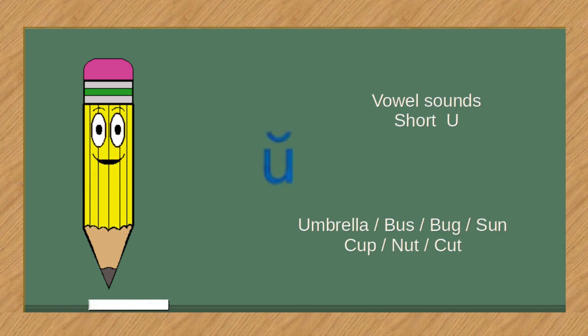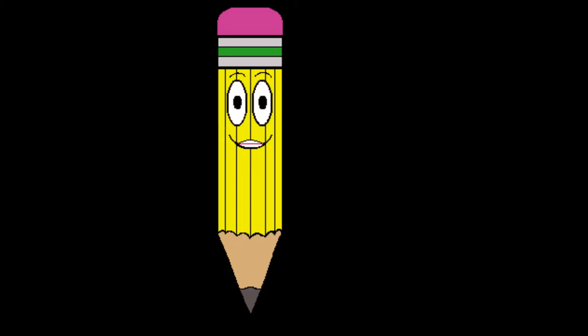Vowel sounds, short U. Umbrella, bus, bug, sun, cup, nut, cut.